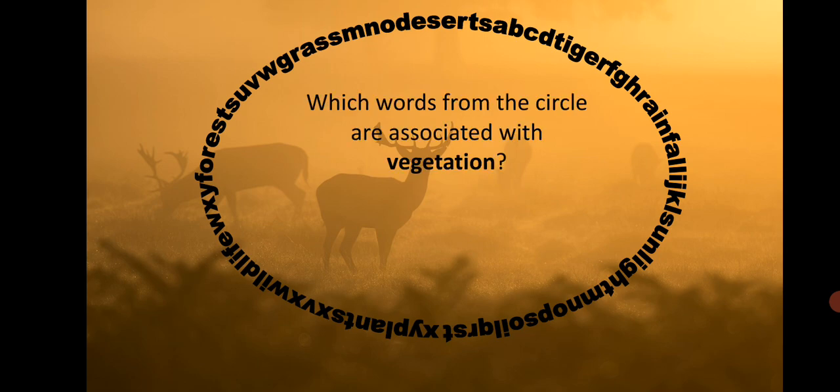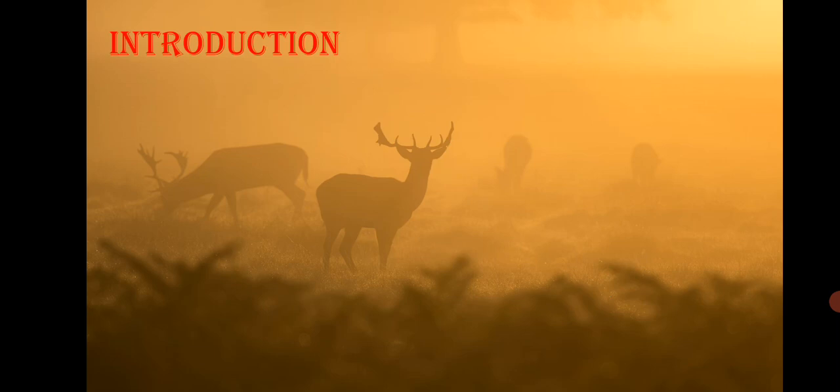First of all, you can see the circle of words and try to find out more words possible. You can see words like plants, forest, grass, desert, rainfall, sunlight, soil, tiger and so on. This is what is part of natural vegetation and wildlife.